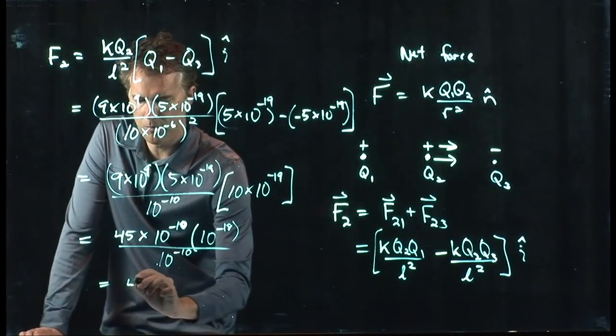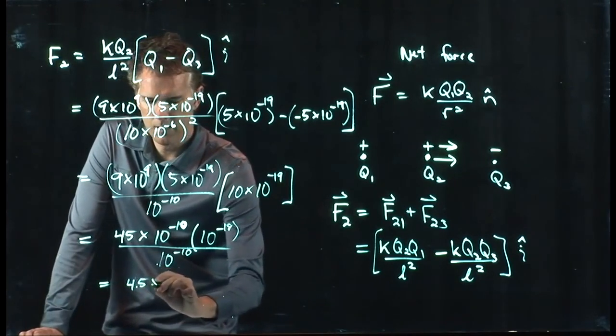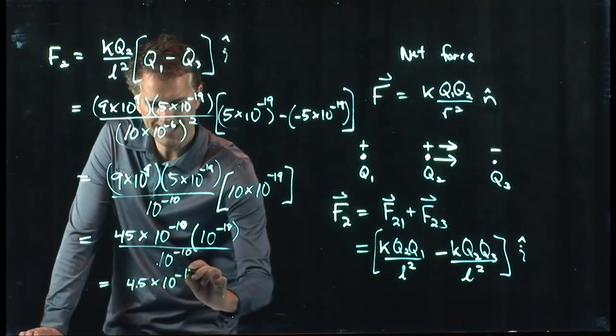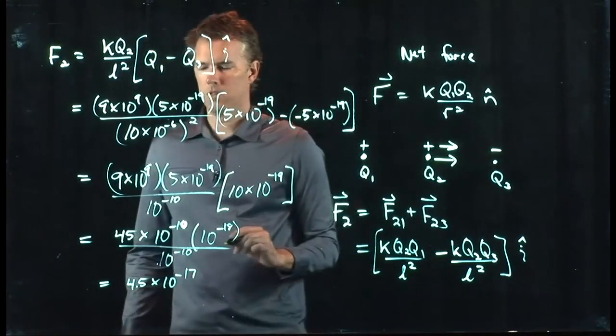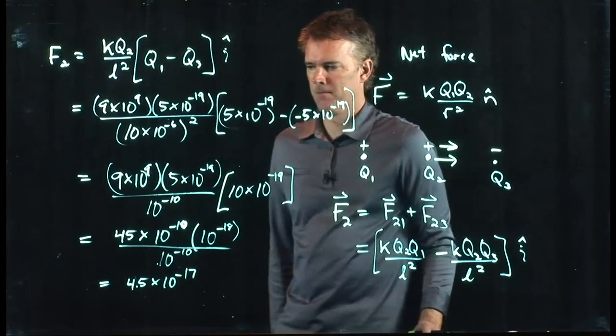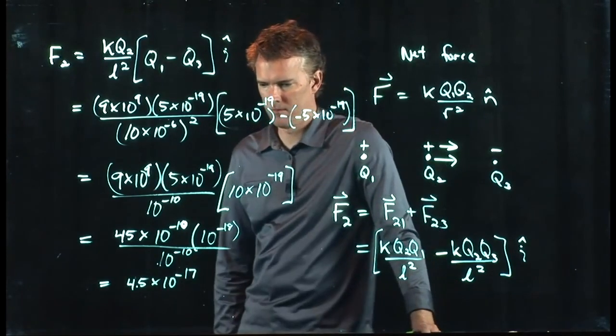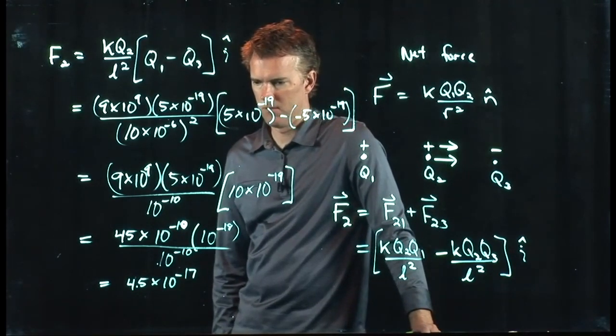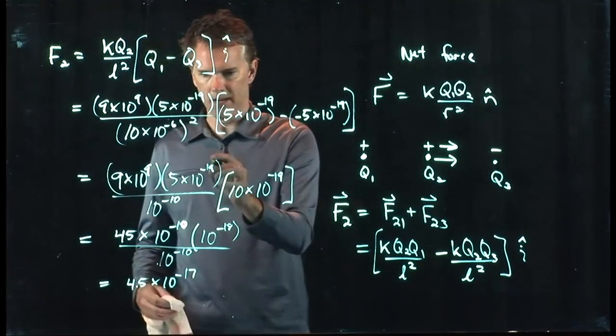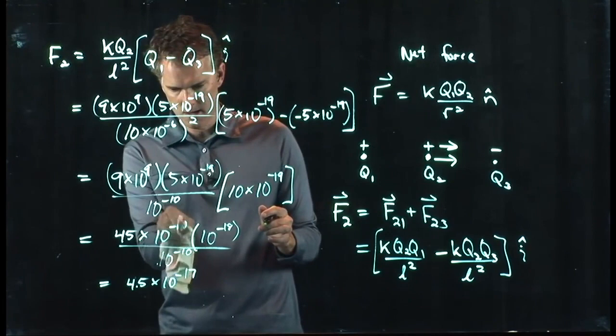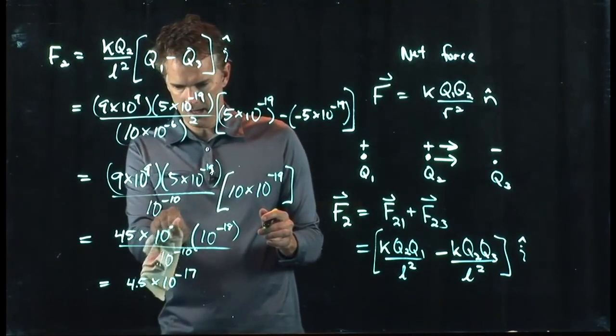So the 10 to the minus 10s drop out, and we get 4.5 times 10 to the minus 17. Yeah. Um, why did the 10 times 10 to the minus 17—so the question was about the 10 to the minus 19 here, what happened to that, and it became...